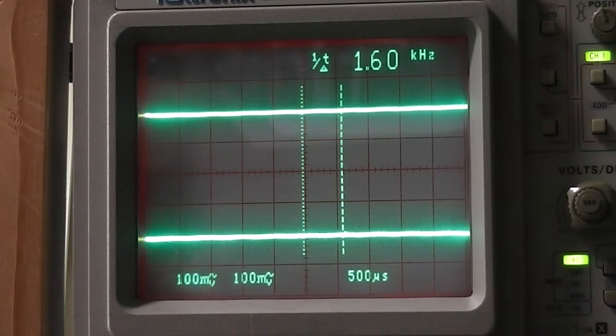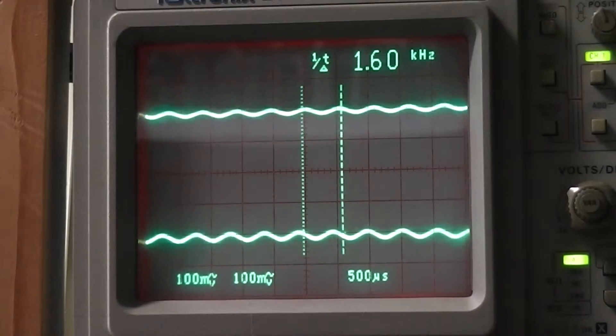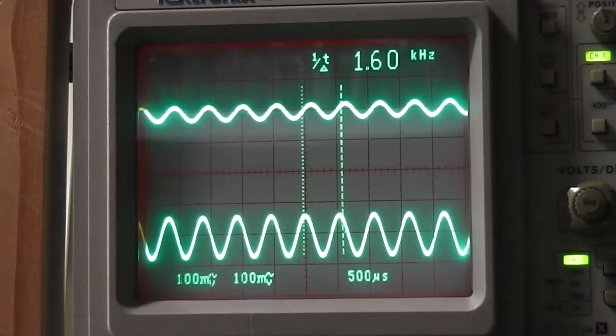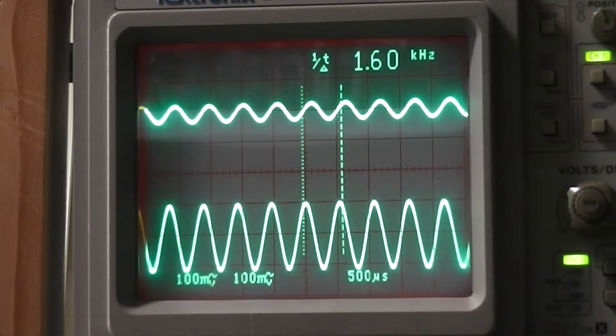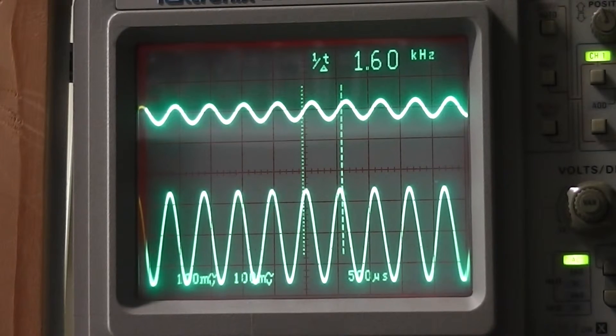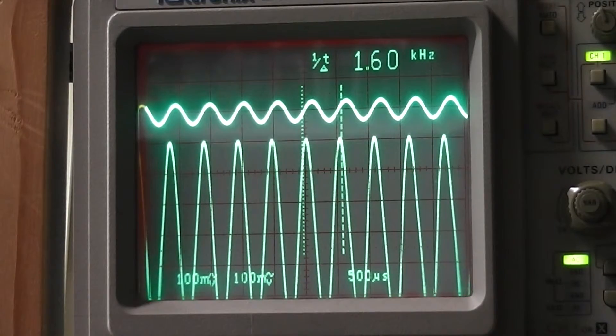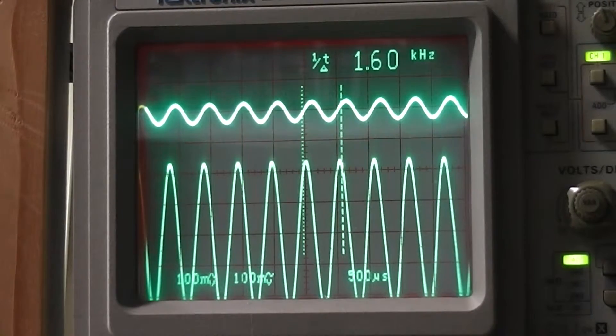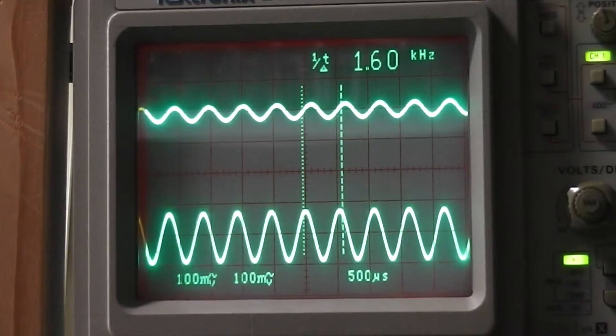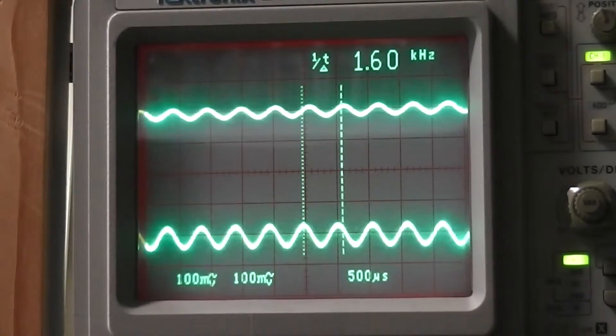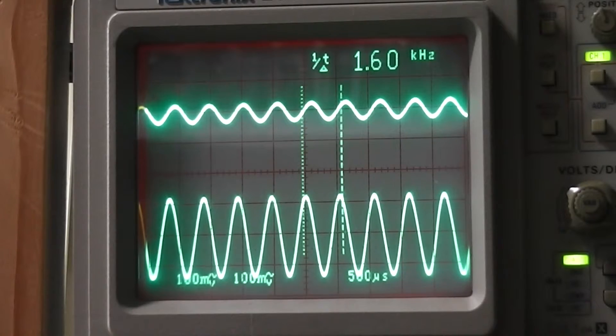I've connected the microphone amplifier and AGC to the oscilloscope so you can see the action of the automatic gain control as I raise the input. The output, which is the top trace, is stabilized. This helps keep the transmitter from splattering or overloading.